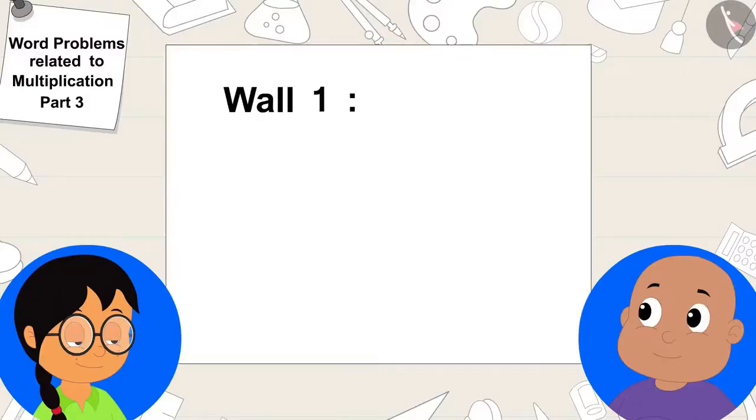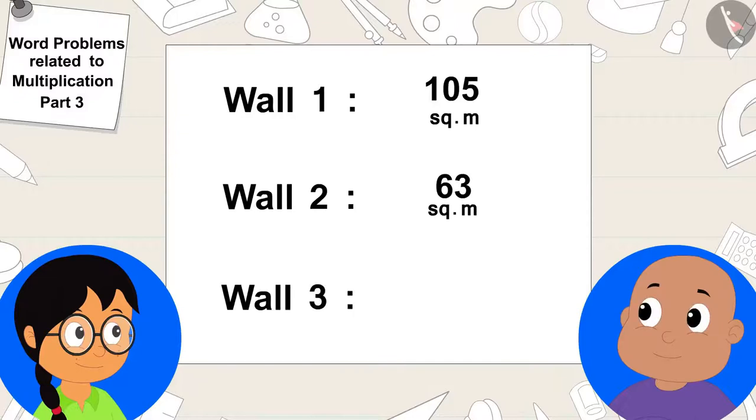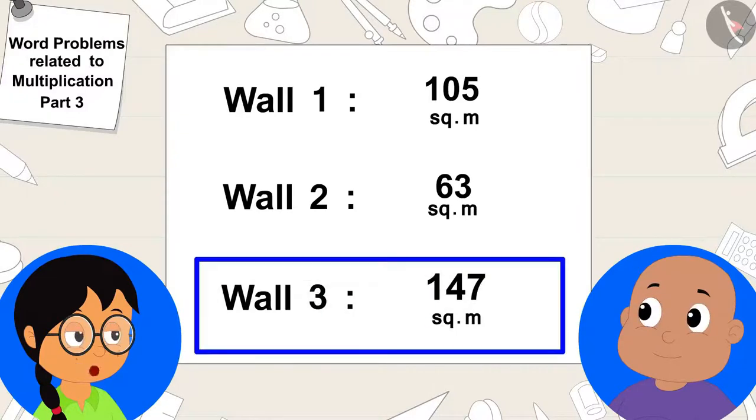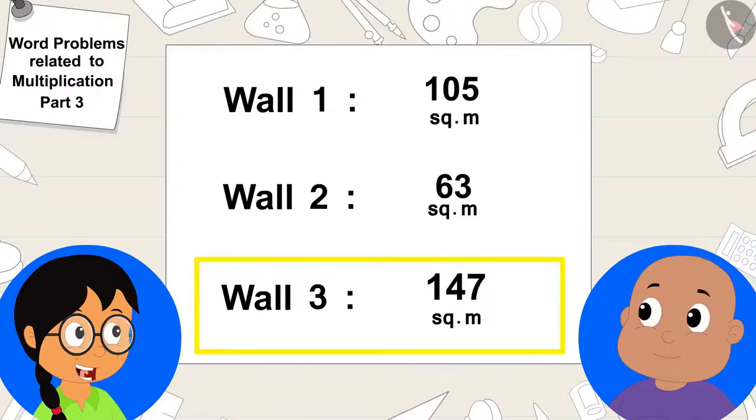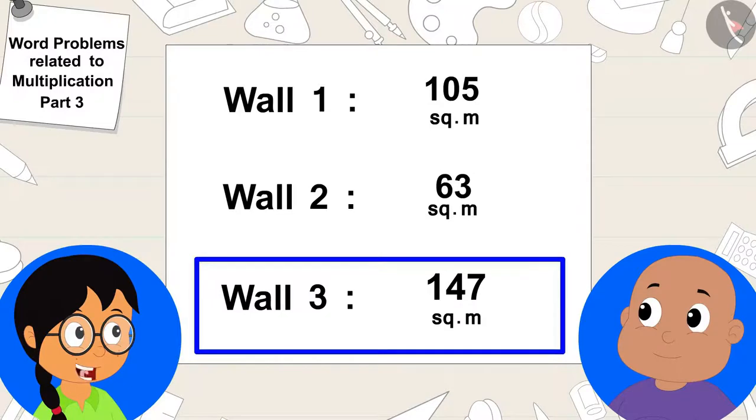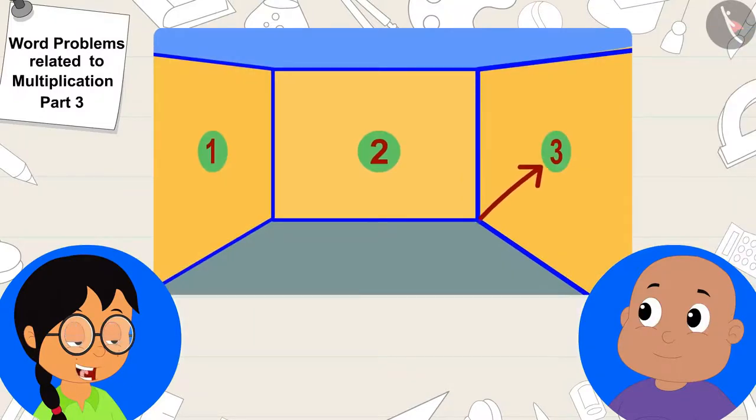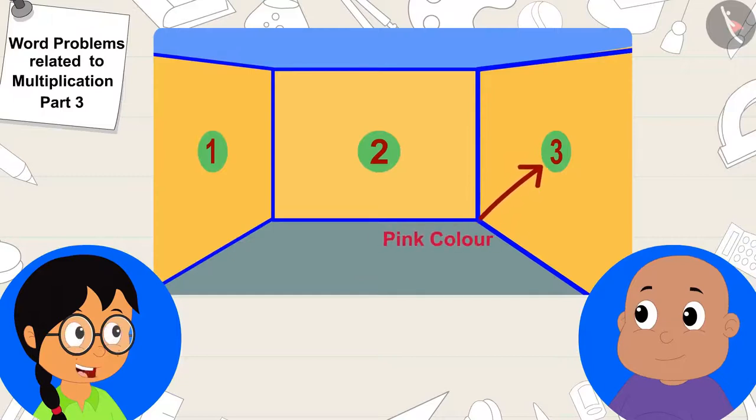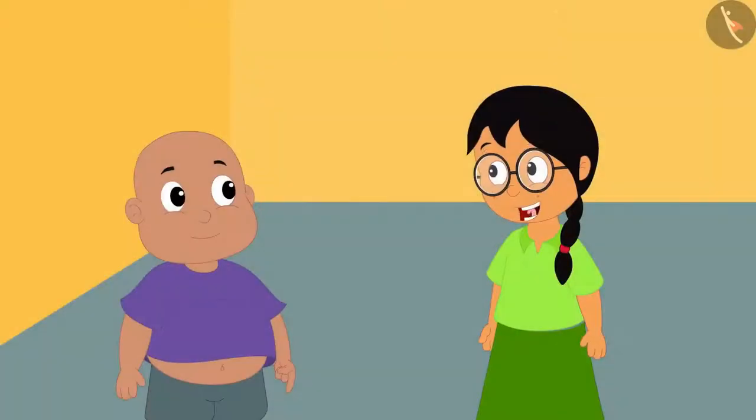Meenu wrote the area of the three walls on a paper. Look, Bablu. The area of this wall is 147 square meters, which is the maximum area. So, I will put my favorite pink color on this wall. Meenu excitedly told Bablu.